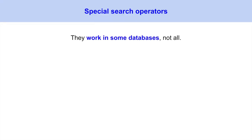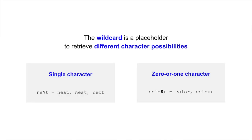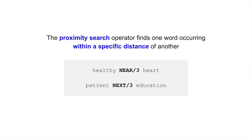The next building block is special search operators. They're special because they work in some databases, not all. First, there's the wildcard operator — a placeholder to retrieve different character possibilities in a word, with options to represent a single character or zero or one characters. The second special operator conducts a proximity search, which finds one word occurring within a specific distance of another word. The wildcard and proximity search operators do not work in PubMed; however, Embase and CINAHL databases permit their use.